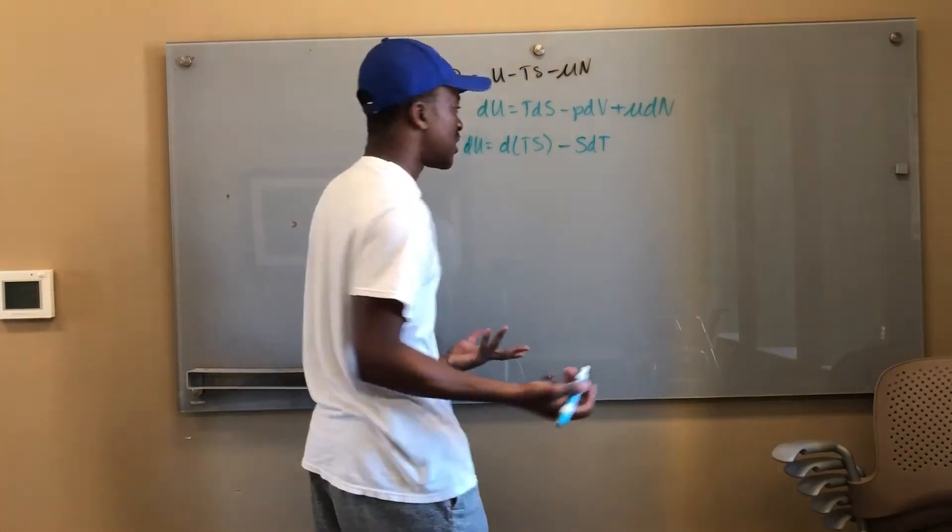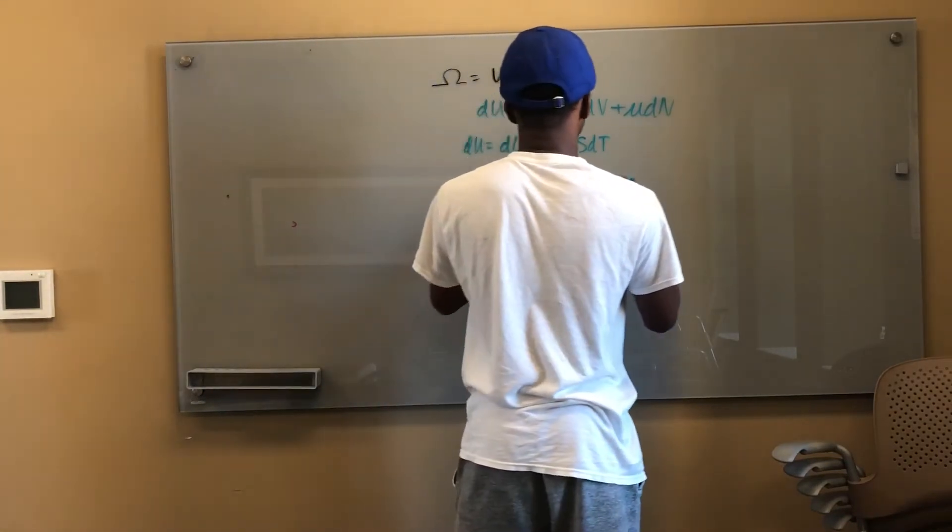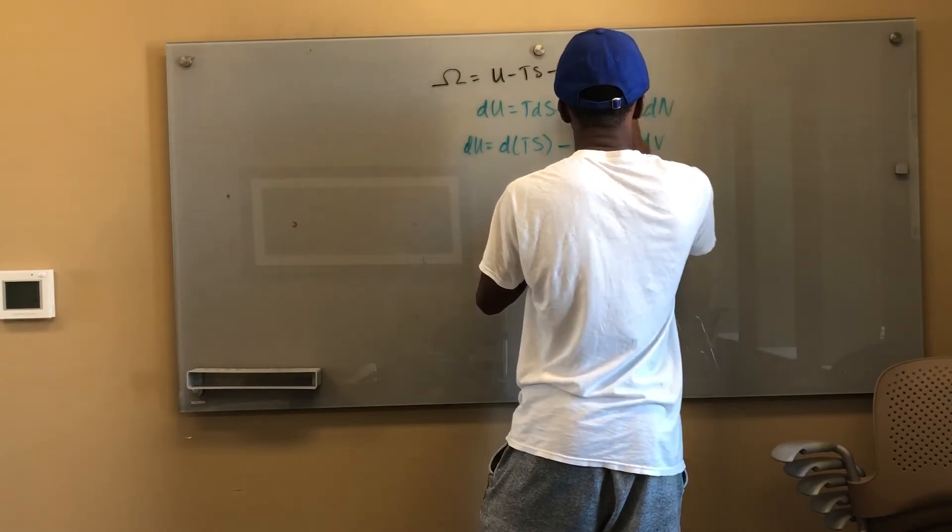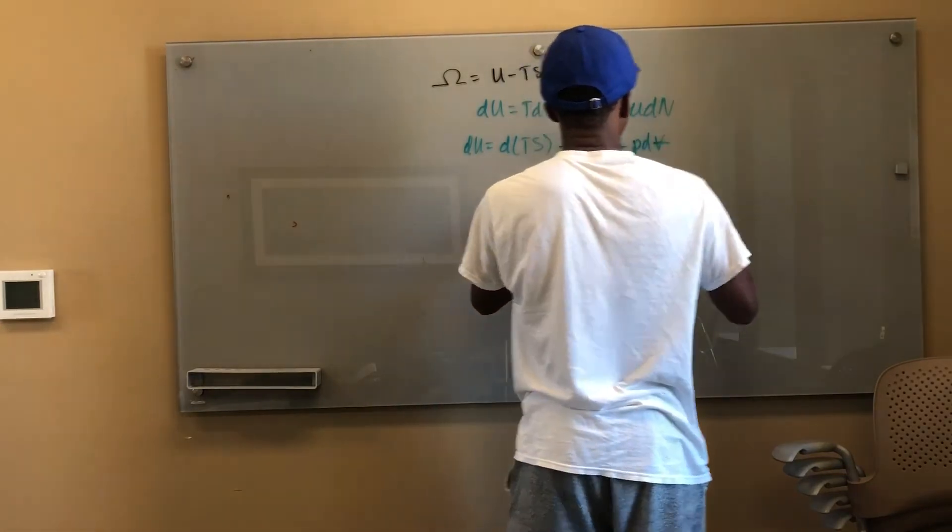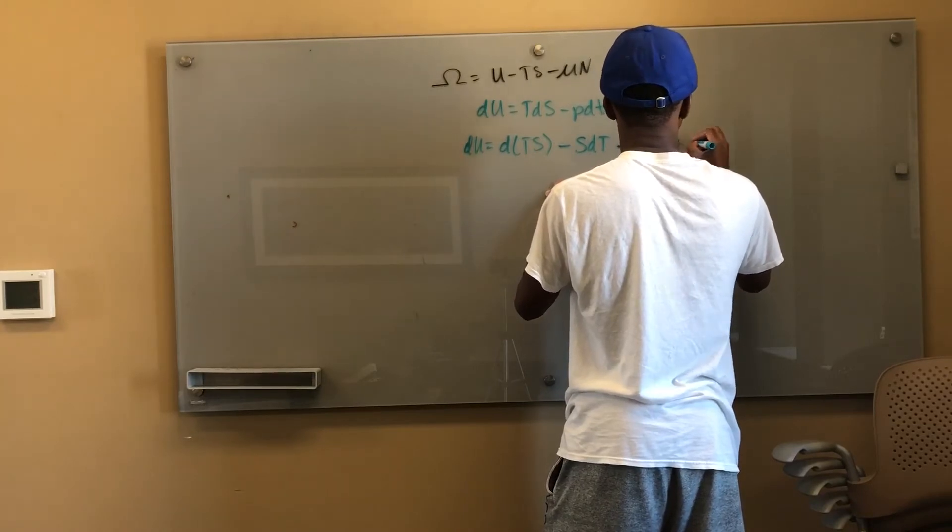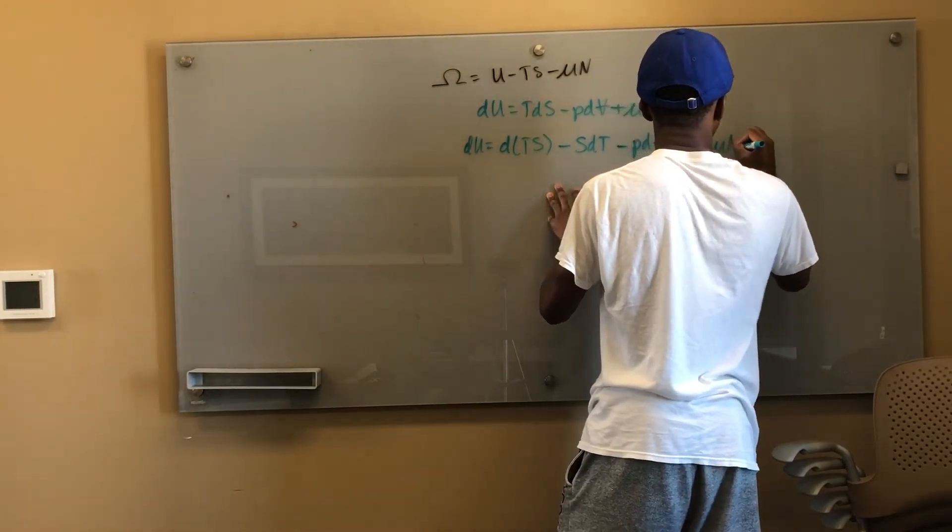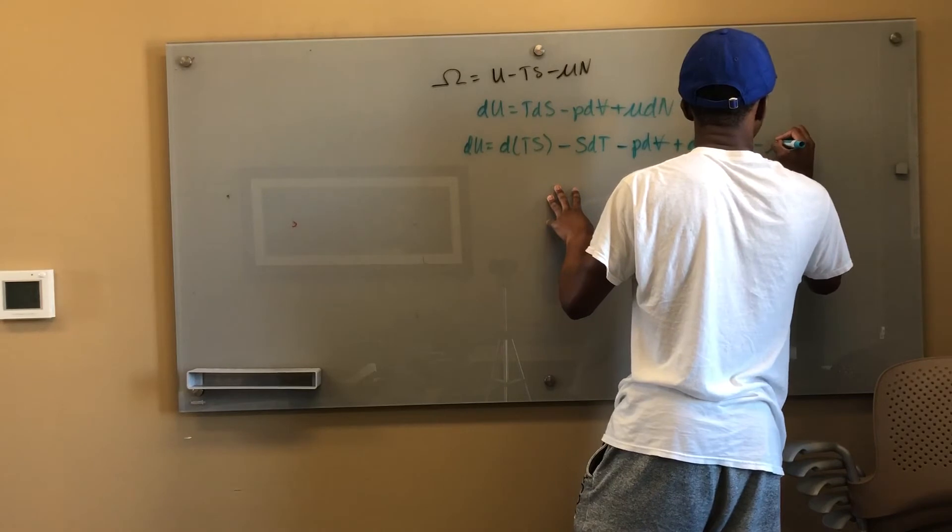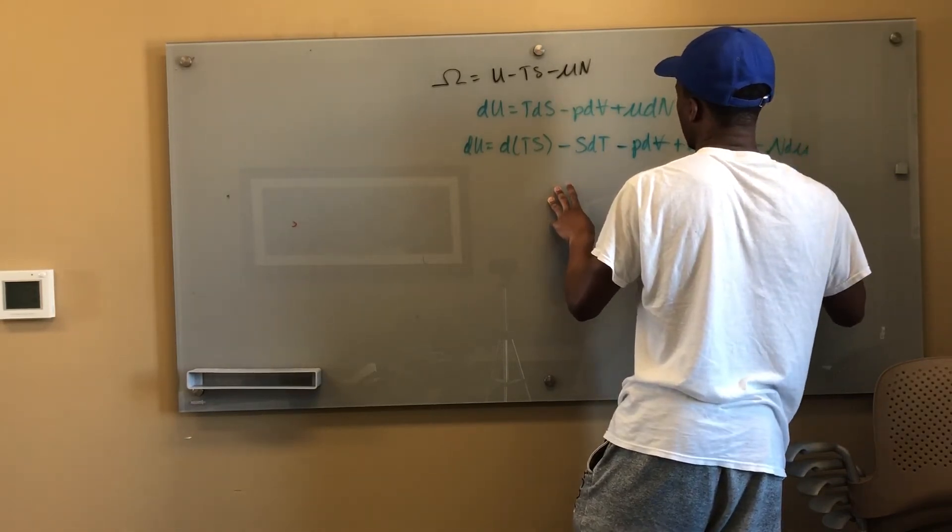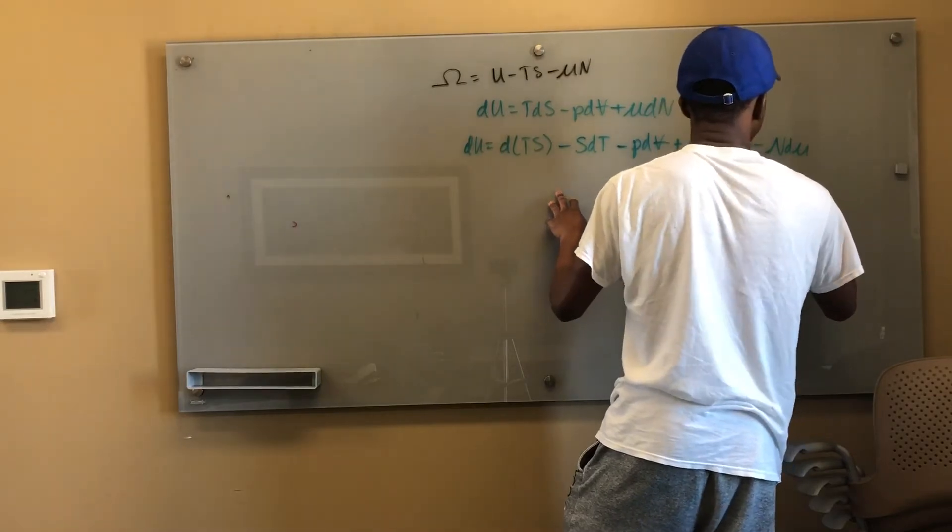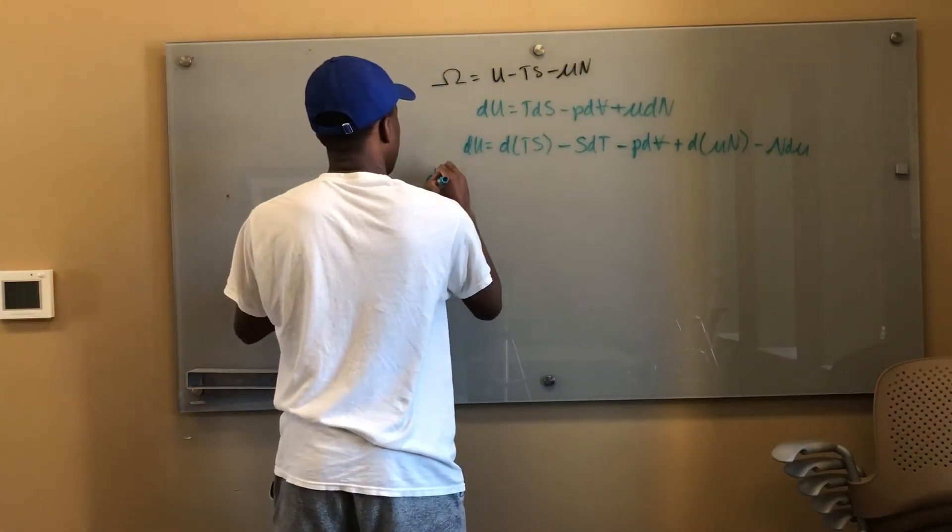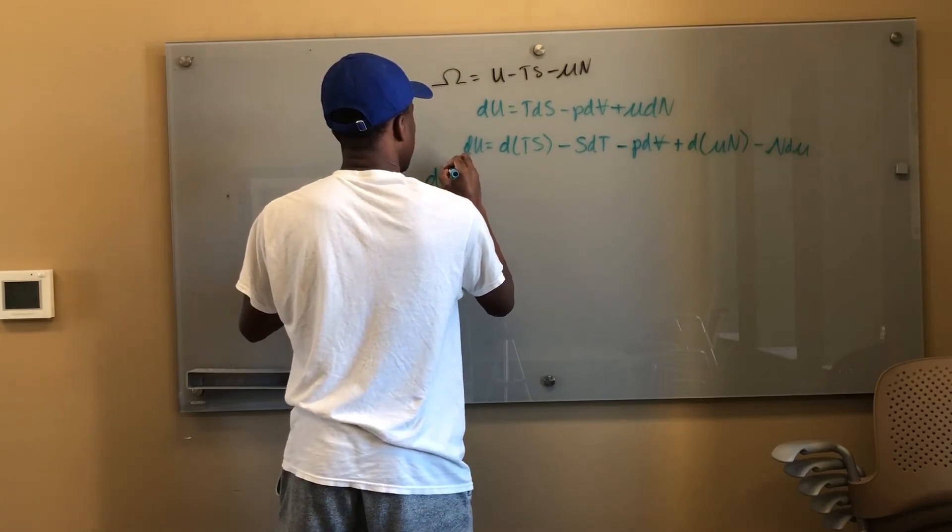We leave our PdV as is, our negative PdV. This should be a capital V. dTS plus d(μN) minus Ndμ.